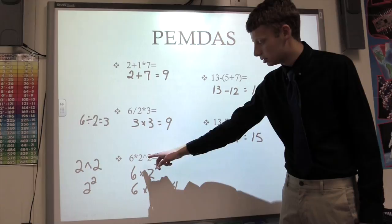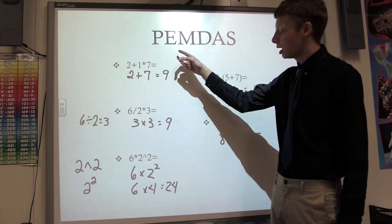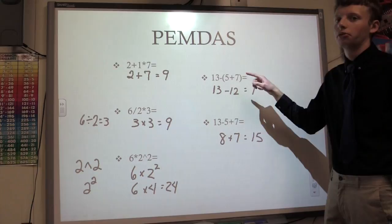Now for this equation, this little caret here indicates an exponent. So 2 caret 2 is 2 squared. And exponents come before multiplication in PEMDAS. So you're going to do 6 times 2 squared, which ends up being 6 times 4. So your answer is 24.